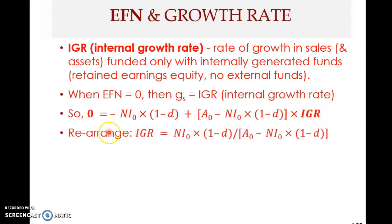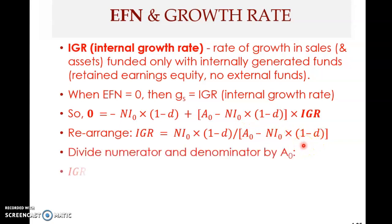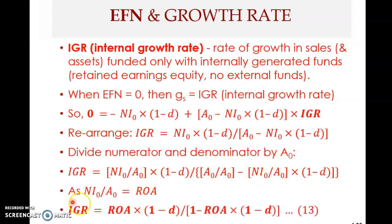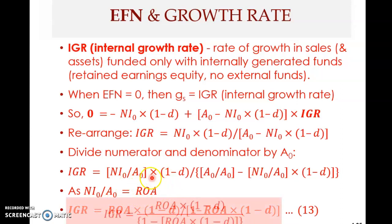We rearrange and express this in terms of IGR. IGR becomes net income multiplied by (1 minus d), divided by assets minus net income multiplied by (1 minus d). We can then divide both the numerator and the denominator by A₀ — the current asset level — so net income divided by A₀ becomes ROA.